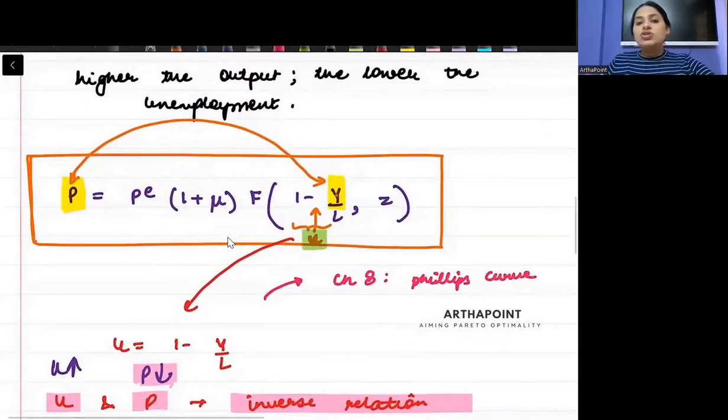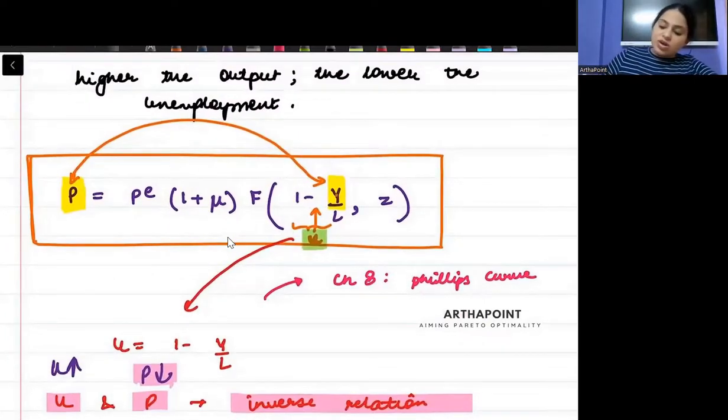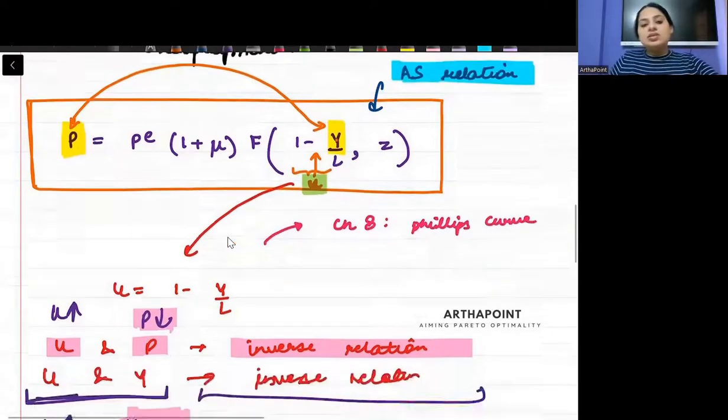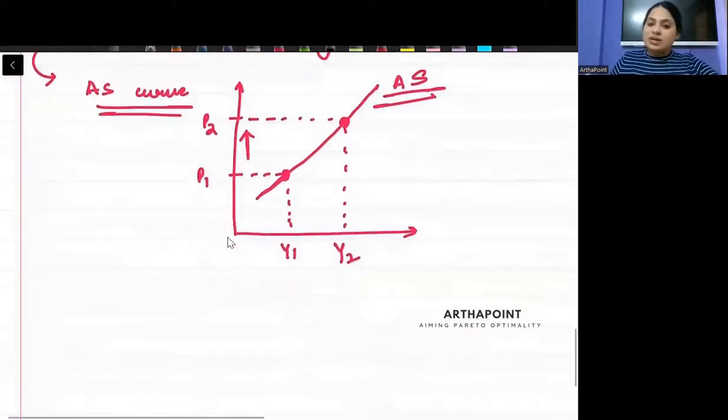And this equation itself, this is called as the AS curve. Its derivation can come in exams. So this is known as the AS relation. I hope all of you are clear with it. Thank you.